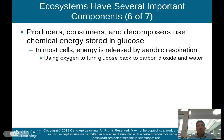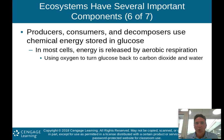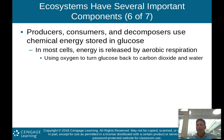Producers, consumers, and decomposers use chemical energy stored in glucose. In most cells, energy is released by aerobic respiration, which uses oxygen to turn glucose back to carbon dioxide and water.